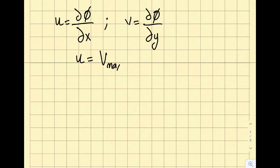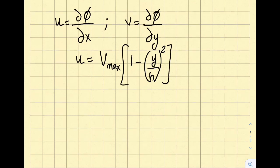If I look at my notes, you will see that the velocity potential and the velocity in the x direction is related by this equation, and the velocity in the y and the velocity potential is related by this equation. In this particular case, I'm given u as V max times 1 minus y over h squared, and v equals zero.